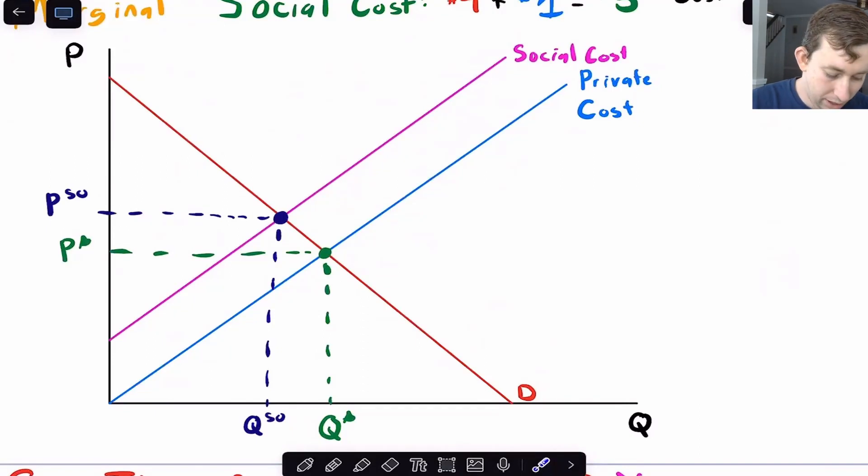So here's a supply and demand diagram. Here's our demand curve. Here's our supply curve, just like we've seen before. And so we have a Q star and a P star.